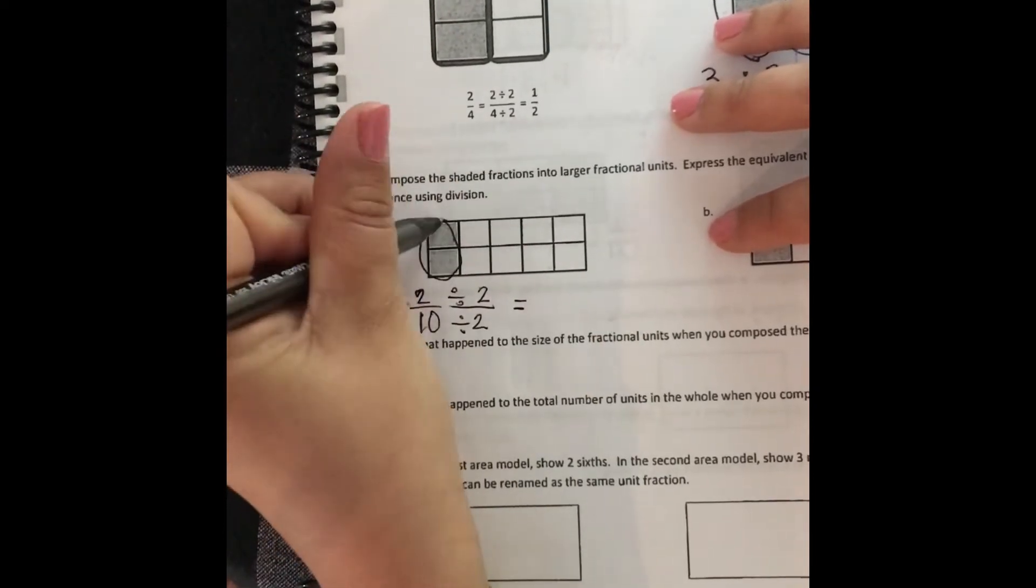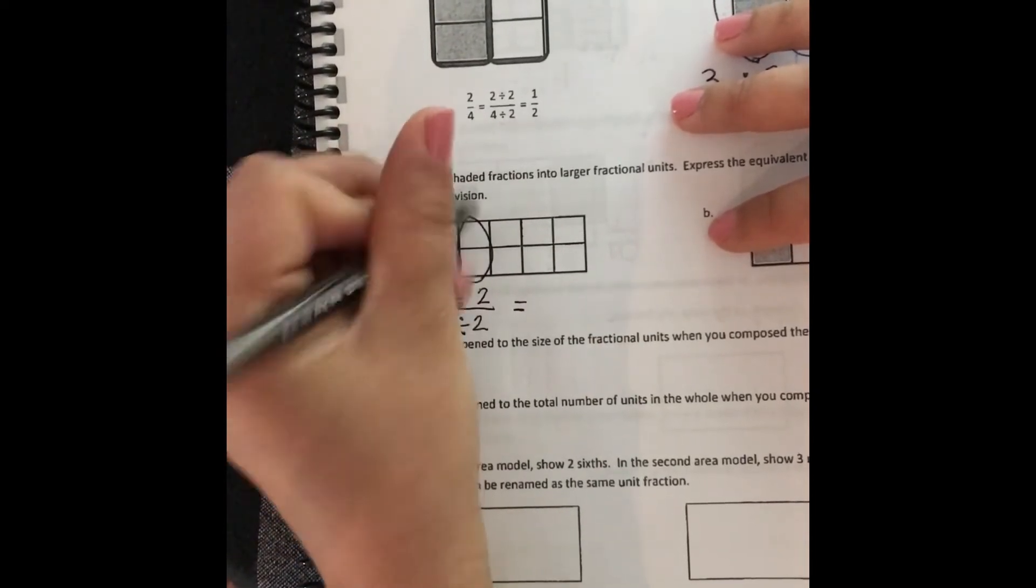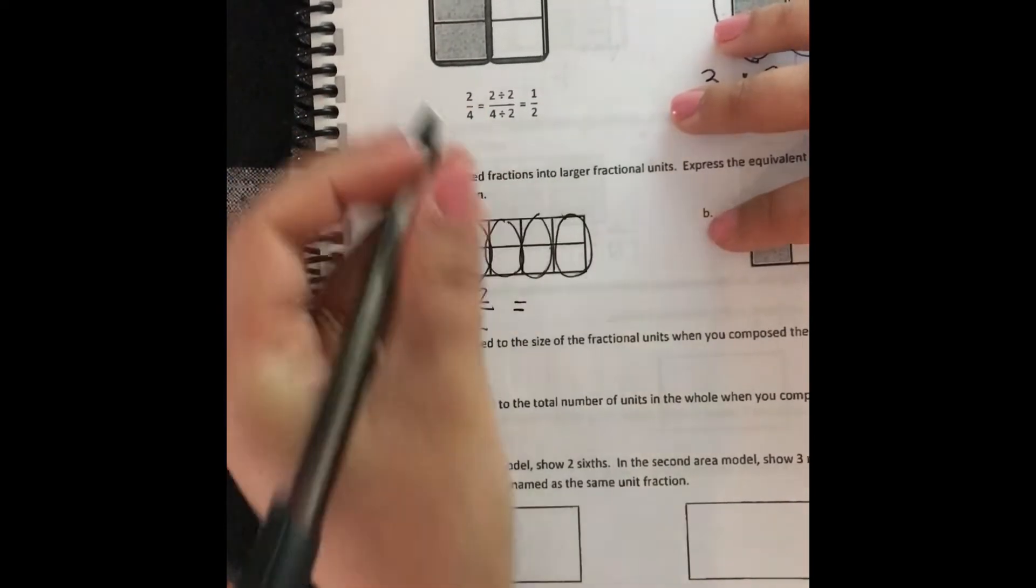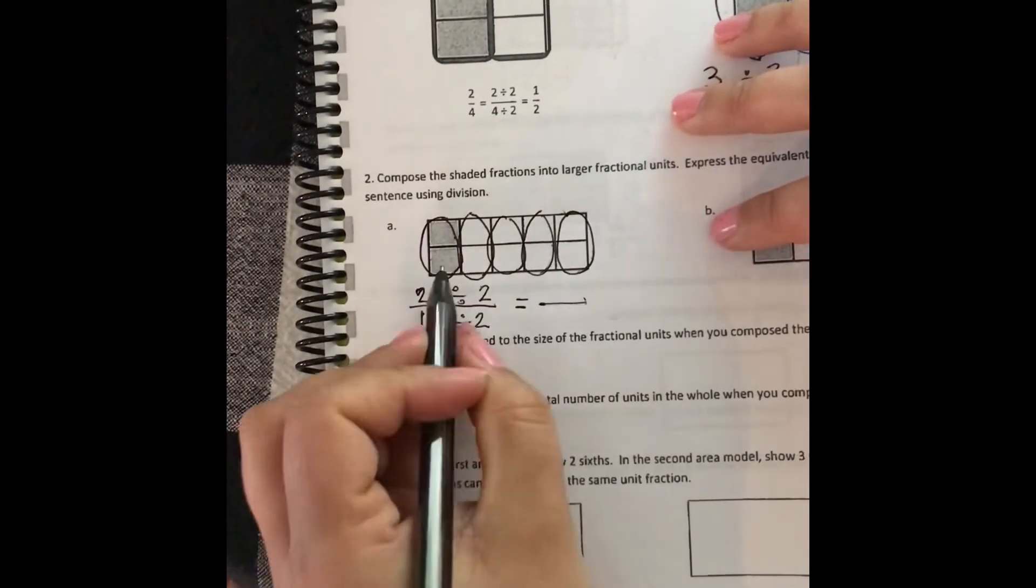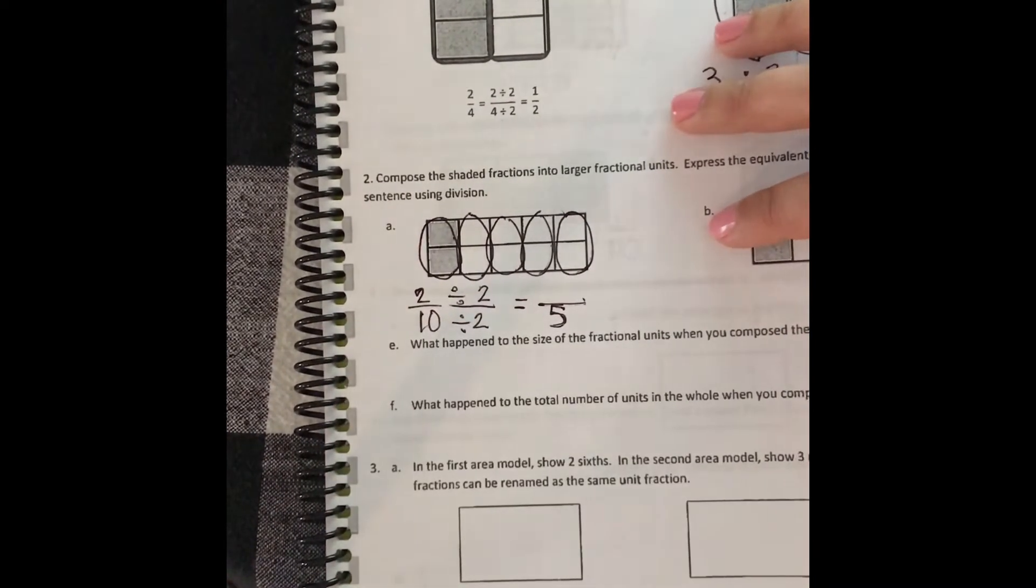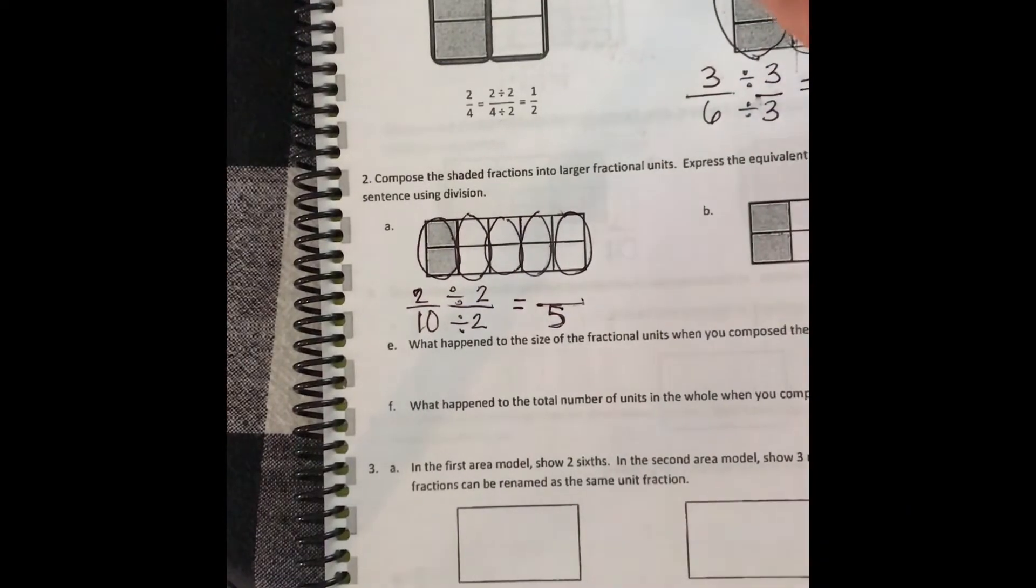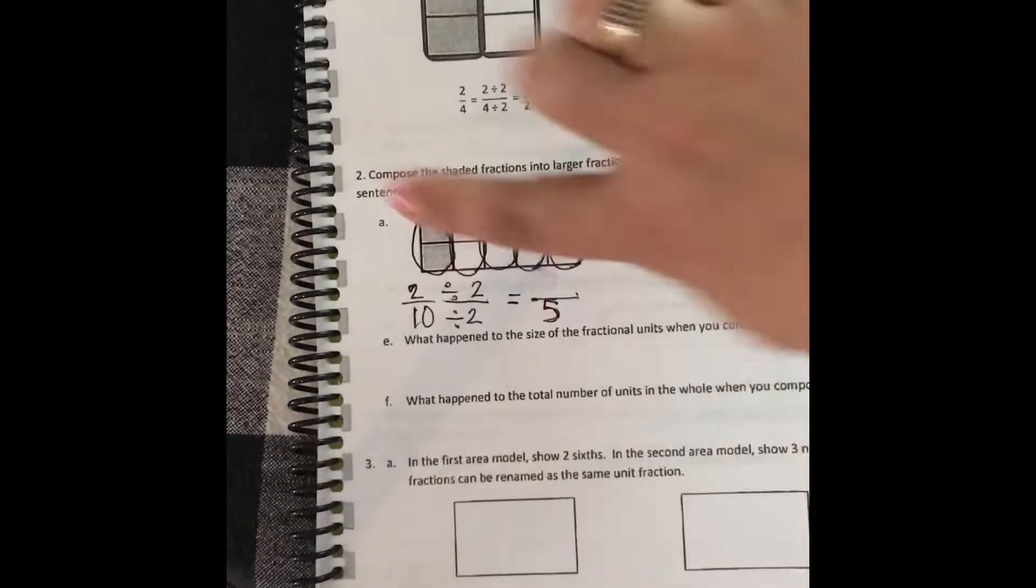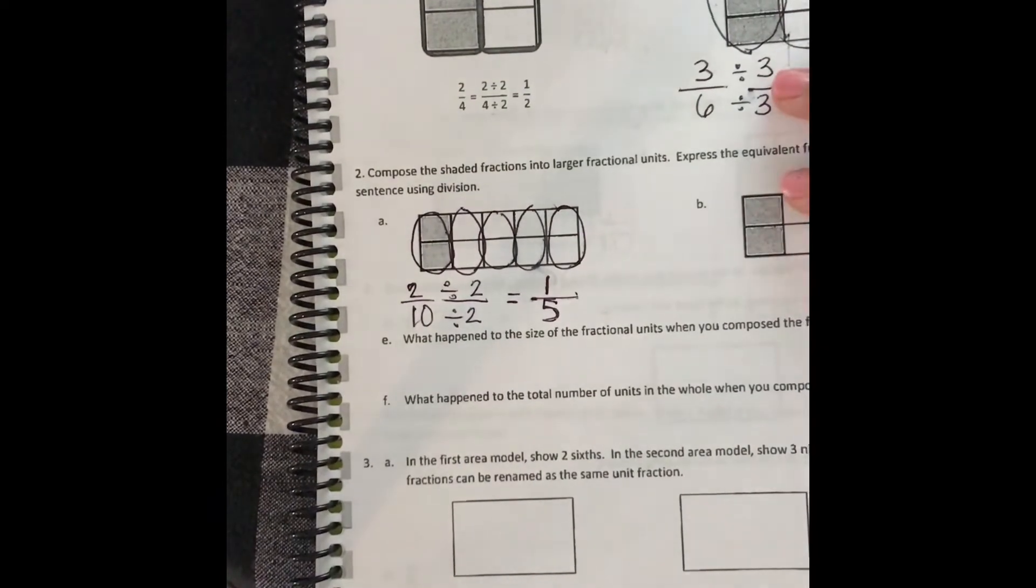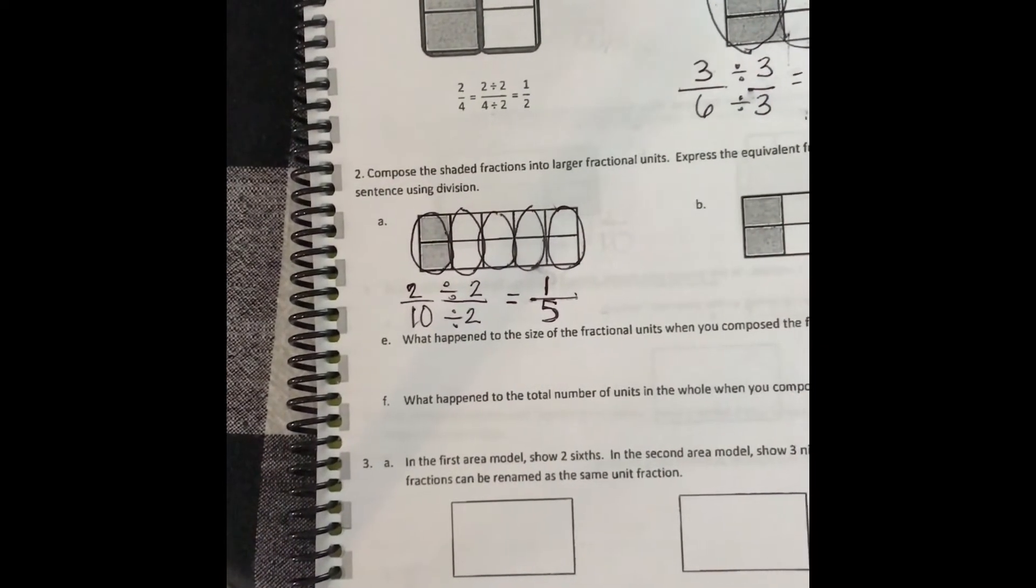Let's see. One group of two, two groups of two, three groups of two, four groups of two, five groups of two. So out of all ten, we were able to make five groups of two. Now we're going to look at just our shaded ones. So here's our shaded one, and we were able to make one group of shaded. So two tenths is equivalent to one fifth.